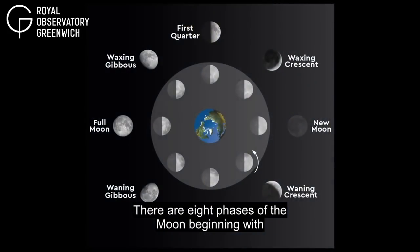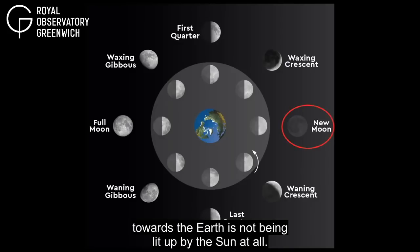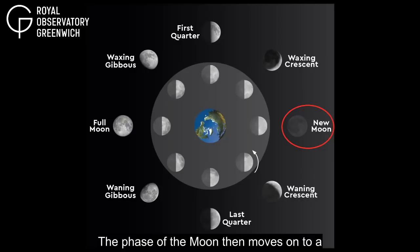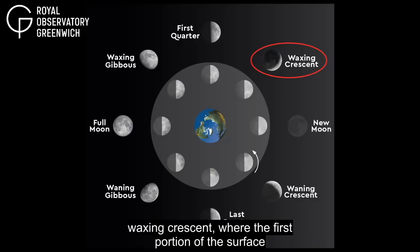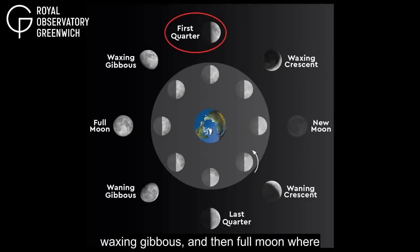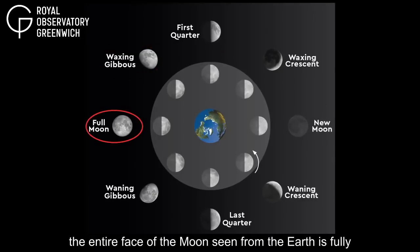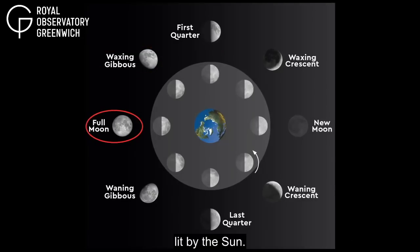There are eight phases of the Moon, beginning with the New Moon, where the side of the Moon facing towards the Earth is not being lit up by the Sun at all. The phase then moves on to a Waxing Crescent, where the first portion of the surface is lit by the Sun and can be seen from Earth. Then the phases continue to First Quarter, Waxing Gibbous, and then Full Moon, where the entire face of the Moon seen from Earth is fully lit by the Sun.